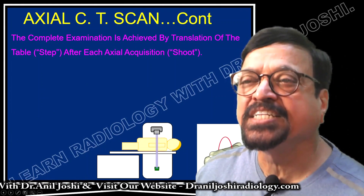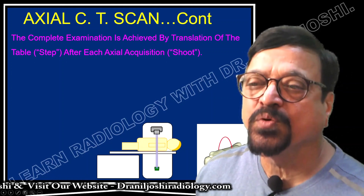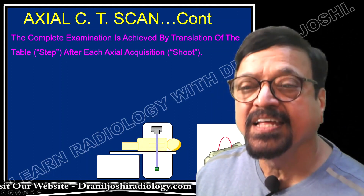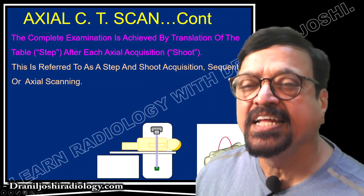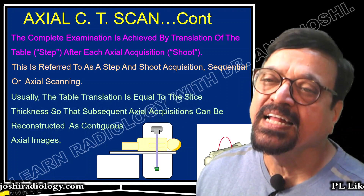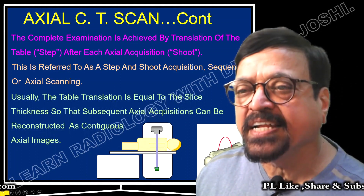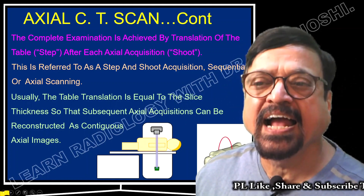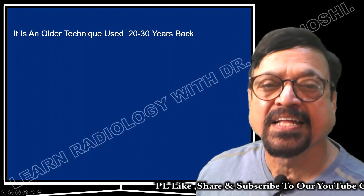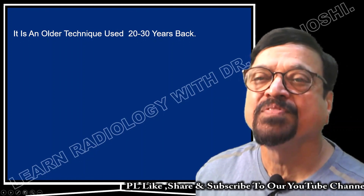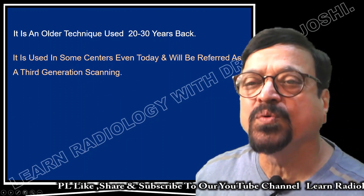The complete examination is achieved by translation of the table step by step after each axial acquisition — referred to as step-and-shoot acquisition, sequential or axial scanning. The table advances by 10 mm at the end of each shoot if taking a 10 mm section. Usually the table transition equals the slice thickness so that subsequent axial sections can be reconstructed as contiguous axial sections. This is an older technique used 20 to 30 years back, still used in some centers, referred to as third generation scanning.